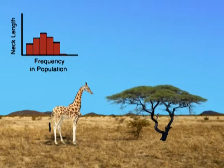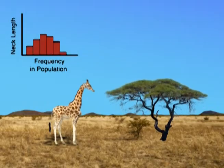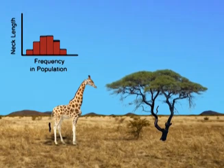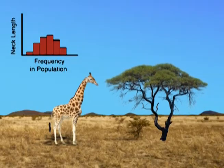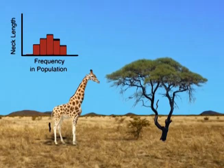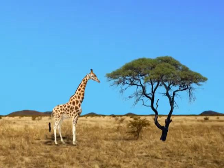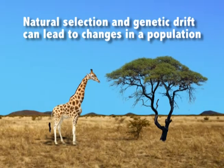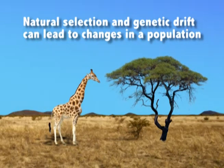A selective pressure driving changes to morphology is well exemplified by the long neck of the giraffe, where the leading hypothesis states that the long neck is the result of competition for food. A longer neck meant less competition for leaves at the higher branches. So natural selection can result in changes within a population through time. Genetic drift can also cause genotypic and phenotypic changes in a population.